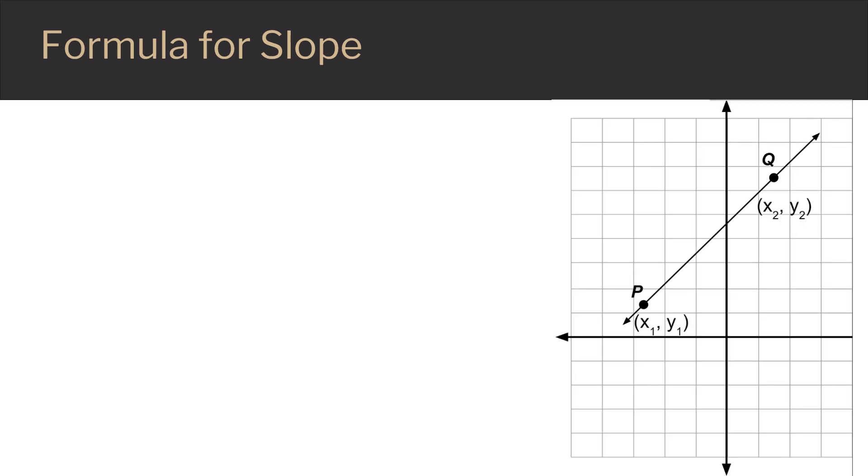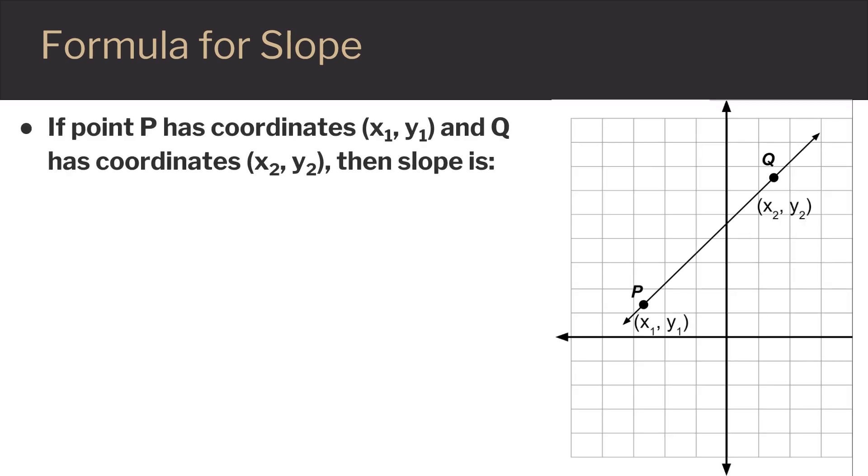So for example, if point P has coordinates (x1, y1) and Q has coordinates (x2, y2), then slope is m equals y2 minus y1,